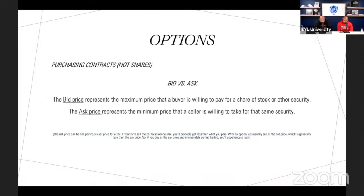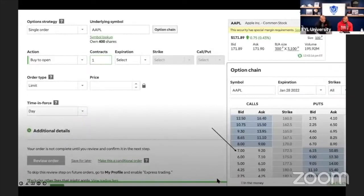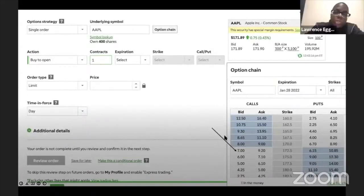People look at their account and say, 'Wait, how come every time I buy my option contract I'm in the negative?' This is probably one of the main reasons. Treat it like the dealership — look at the bid, go 10 to 15 cents above the bid, and say that is where I'm staying. If it fills, it fills; if it doesn't, it doesn't.